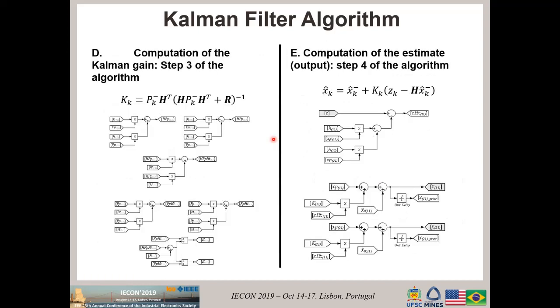Letter D is the computation of the Kalman filter, step three of the algorithm. We have here all the blocks required to make this computation, also the inversion of this matrix. And E, the computation of the estimate, which is the output.